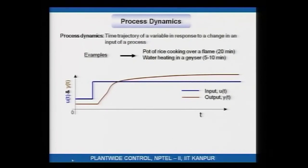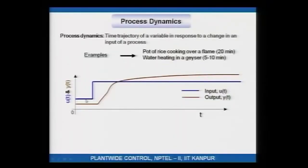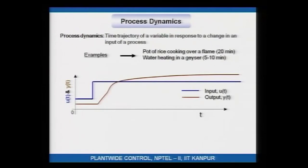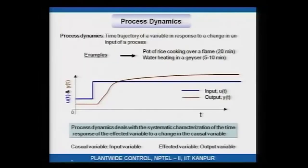Here is a very simple example: the blue line is the input and the brown line is the output. Let us say the input is the geyser power — 0 when off, then going to 1 or 2 kilowatts when switched on. The brown variable, the output, is the temperature of the water in the geyser. It is at ambient temperature; as the geyser is switched on, the temperature does nothing for a little bit, then starts to rise and keeps on rising, eventually settling to a final steady-state value. This is the dynamics of the output variable — geyser water temperature — in response to the input, which is the power input to the geyser. Essentially, process dynamics deals with the systematic characterization of the time response of the affected variable to a change in the causal variable.